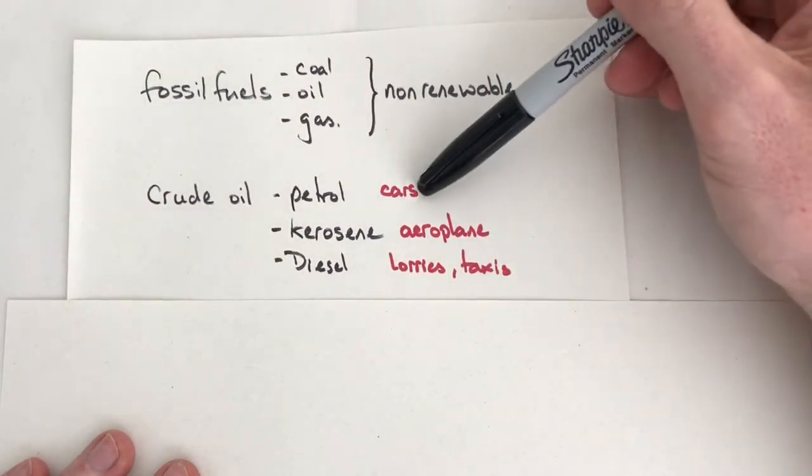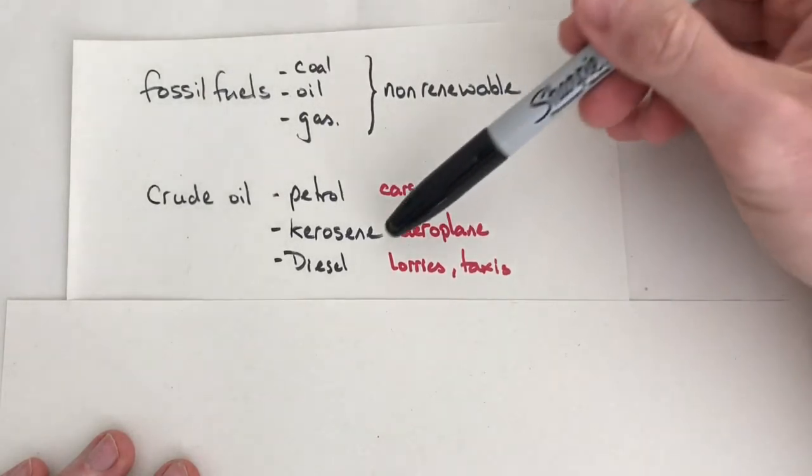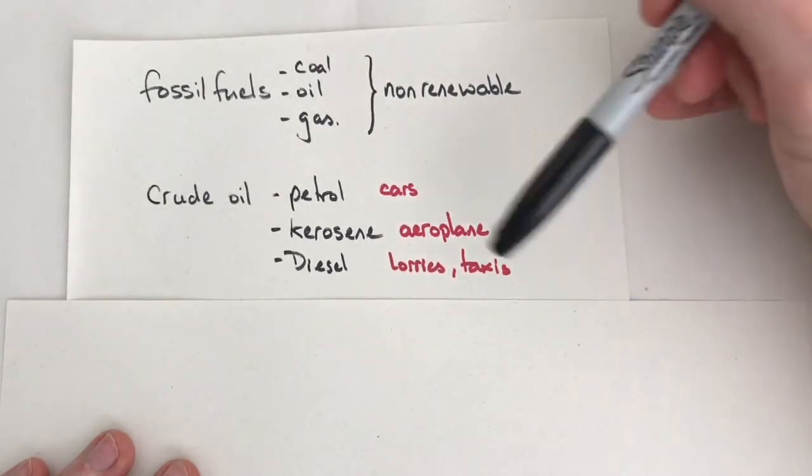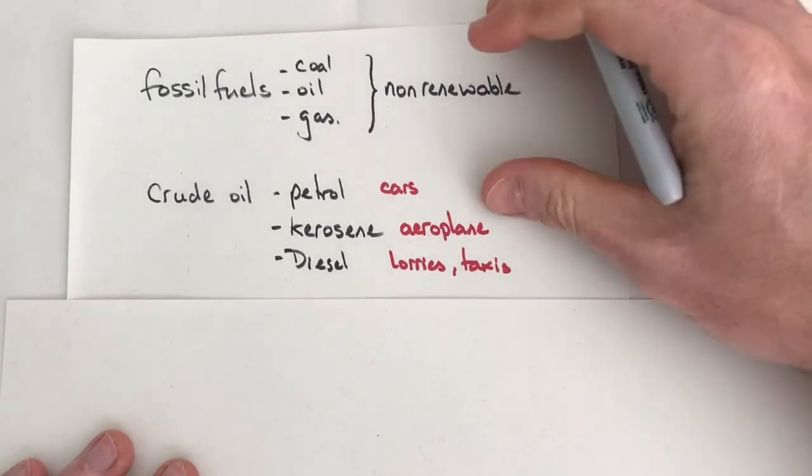So petrol is used by cars, kerosene is jet fuel for airplanes, and diesel tends to be for larger vehicles like lorries and taxis and tractors as well.